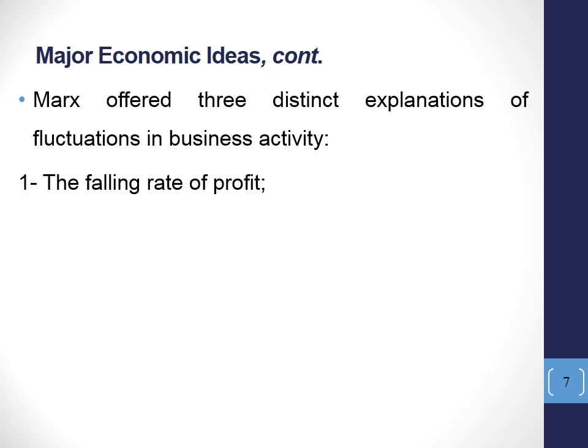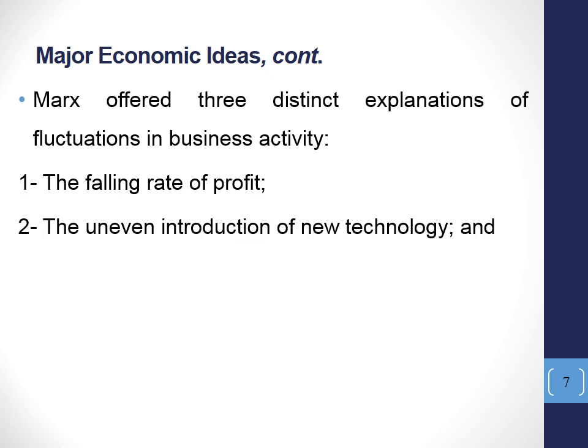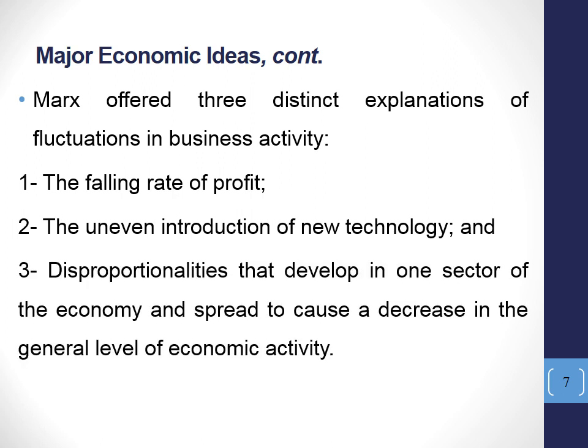The three explanations are: number one, the falling rate of profit as discussed before; number two, the uneven introduction of new technology in some sectors of the economy; and number three, disproportionality that develops in one sector of the economy and spreads to cause a decrease in the general level of economic activity — meaning overproduction in one sector shifts to other sectors and affects the general level of economic activity.